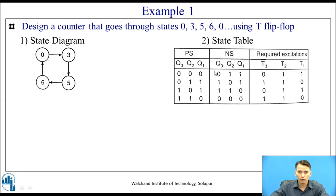For T3: the transitions are 0→0 (input 0), 0→1 (toggle, input 1), 1→1 (input 0), and 1→0 (input 1). For T2: from present state to next state, there is always a transition (0→1 or 1→0), so T2 inputs are all 1. For T1: the excitation inputs follow 0→1 (1), 1→1 (0), 1→0 (1), 0→0 (0).